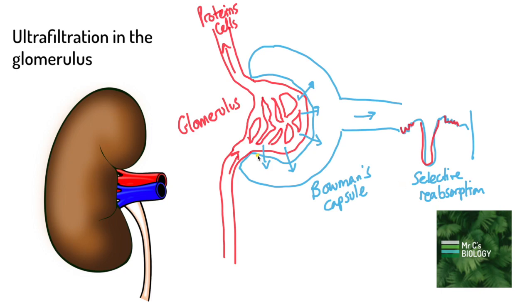One of the adaptations of the Bowman's capsule is that it has podocyte cells around here. These podocyte cells have big pores in them because they have these finger-like projections that wrap around the little capillaries. That gives them a lot of pores.